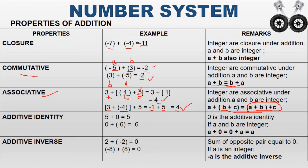The next property is additive identity. If any value is added with 0, we get the same value. So 0 is called the additive identity. For example, 5 plus 0 equals 5, and 0 plus minus 6 equals minus 6. In general terms, we write: A plus 0 equals 0 plus A equals A.